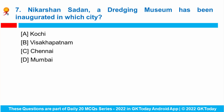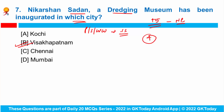Question number seven: Nikarshan Sadhan, a dredging museum, has been inaugurated in which city? Union Minister for Ports, Shipping and Waterways Mr. Sarbananda Sonowal inaugurated the Nikarshan Sadhan dredging corporation museum in Visakhapatnam. The Dredging Corporation of India is celebrating 45 years of service to national ports. This entity, owned by four major ports under the Ministry of Ports, Shipping and Waterways, is a specialized maritime unit of dredging and land reclamation.